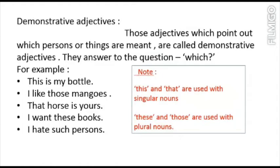'This is my bottle.' Here this is the demonstrative adjective because you are pointing to the bottle. 'I like those mangoes.' Those is the demonstrative adjective — those means the mangoes are far from you. 'That horse is yours.' That is the demonstrative adjective. 'I want these books.' These is the demonstrative adjective. 'I hate such persons.' Such is used to point to certain persons, so such is the demonstrative adjective here.